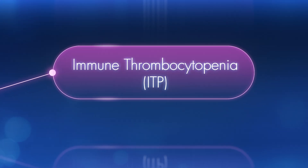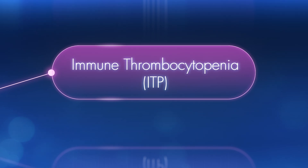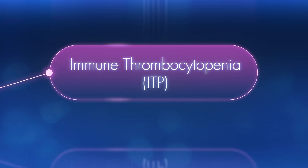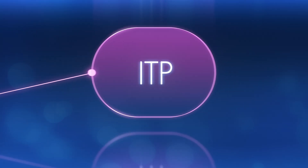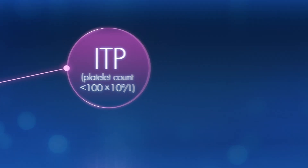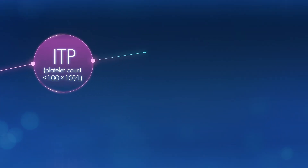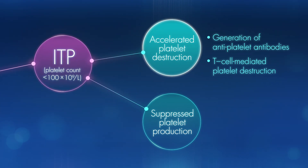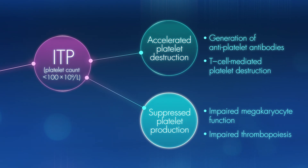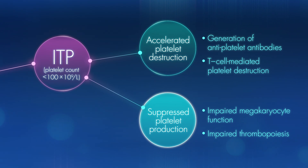is a complex autoimmune disorder characterized by thrombocytopenia — that is, a platelet count of less than 100,000 per microliter — resulting from accelerated platelet destruction and suppressed platelet production.